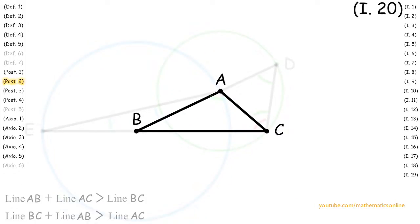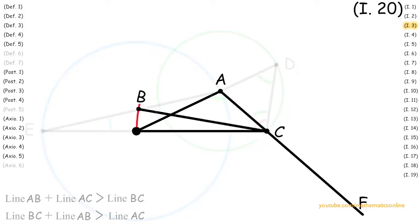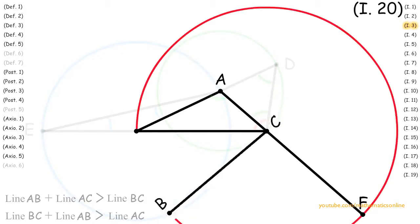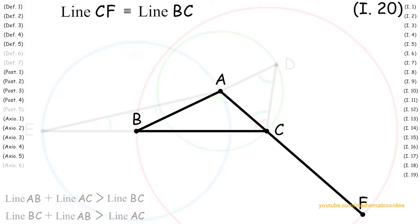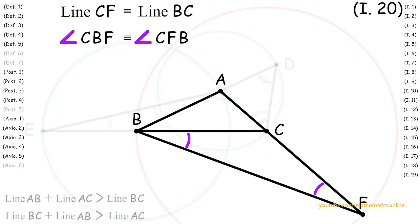Next, we extend line AC to an arbitrary point F. With line BC and line CF, we apply Proposition 3 so that line CF is congruent to line BC. Next, we create line BF with Postulate 1. Now since triangle BCF has two sides that are congruent, then by Proposition 5, angle CBF is congruent to angle CFB.